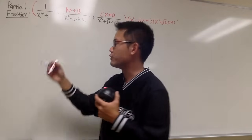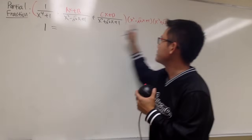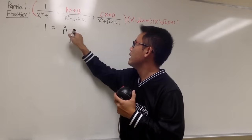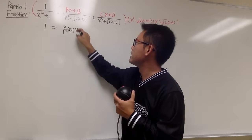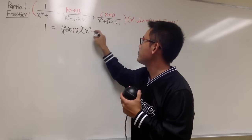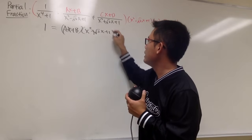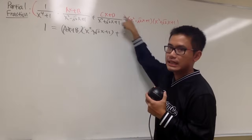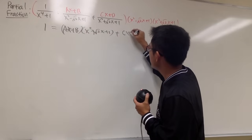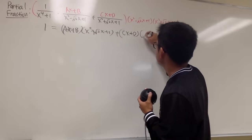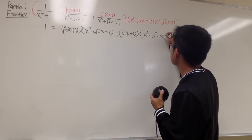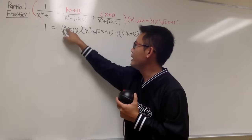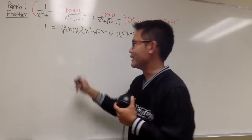Let's do the partial fraction the usual way — multiply everything by the lowest common denominator, which is the product of both factors. This product is nothing but x to the fourth power plus 1. When you multiply through, the first fraction leaves ax plus b times x squared plus square root of 2x plus 1, and the second leaves cx plus d times x squared minus square root of 2x plus 1.